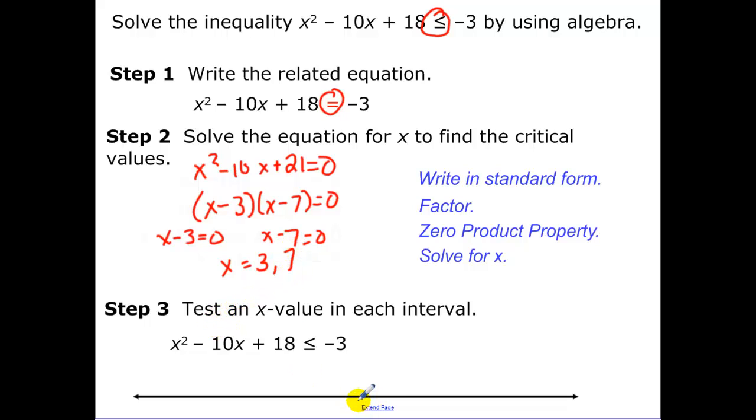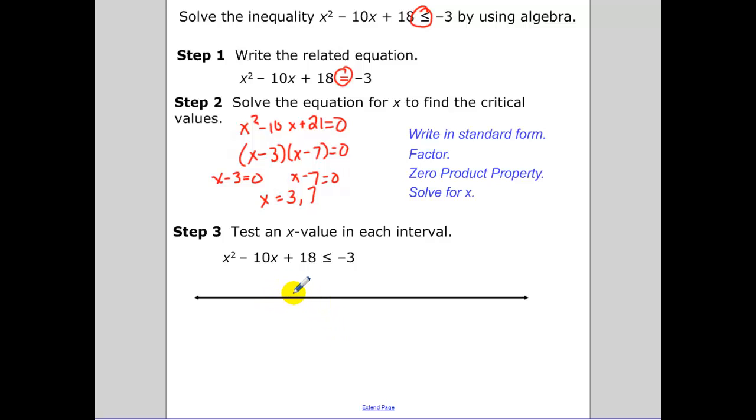So now what you want to do is these are what I like to call critical points. So I put those critical points on a number line. So I put 3, 7. Now on this number line, I need to look at numbers less than 3, numbers in between 3 and 7, and numbers greater than 7, and test and see whether or not this inequality is true. So I test a number less than 3, so I'm going to test zero. When I plug in zero, we get 18 less than or equal to negative 3. That is false because 18 is obviously greater than negative 3.